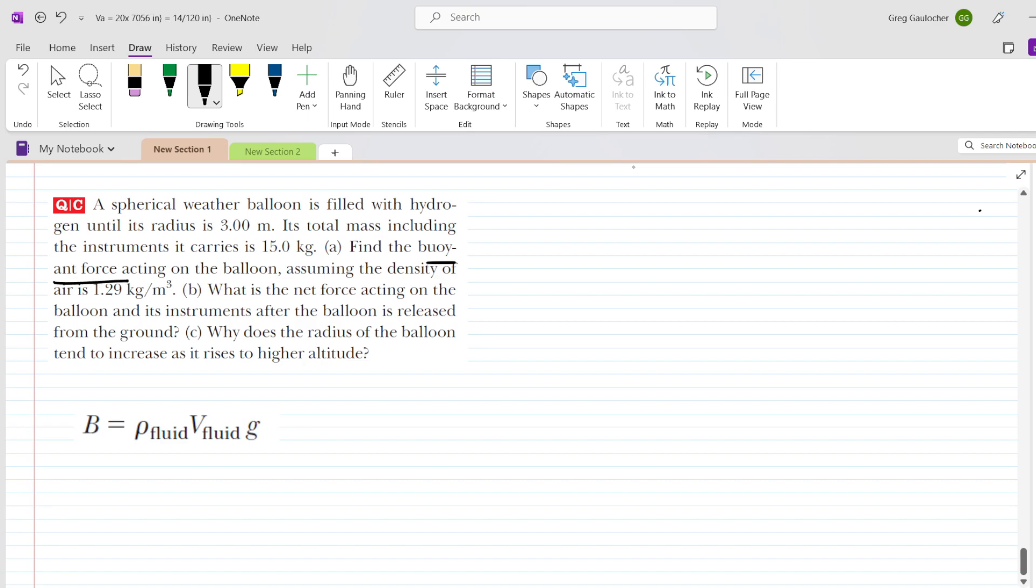We know that the buoyant force is the density of the fluid times the volume of fluid times g, but we want to be careful about what we mean by those first two terms. The density of the fluid is not the fluid inside the balloon, but rather the fluid that envelops the balloon. The balloon is immersed in air, and therefore we want to make sure that we use the density of air when using this calculation.